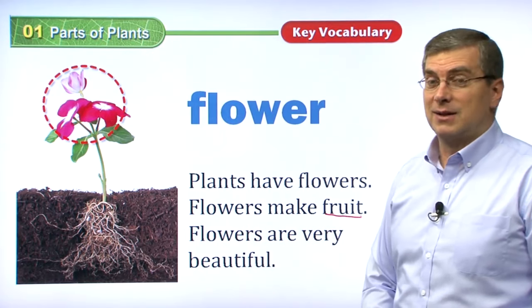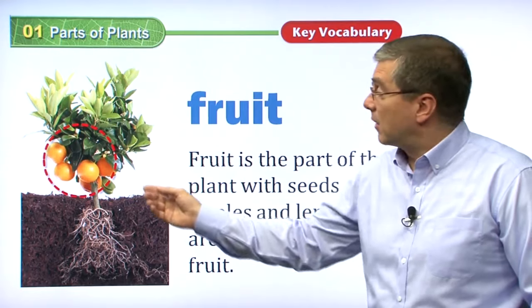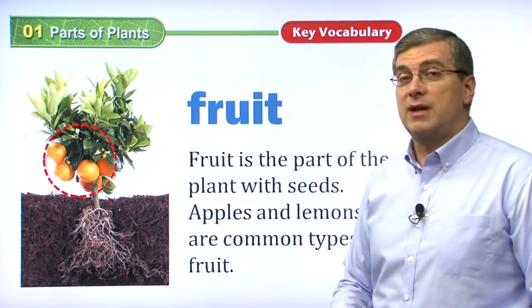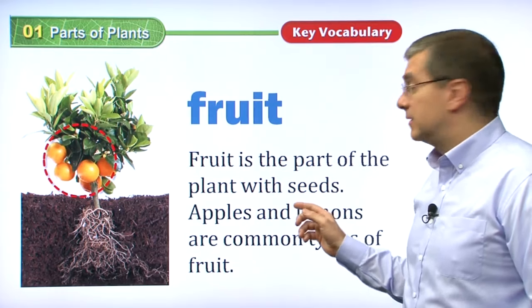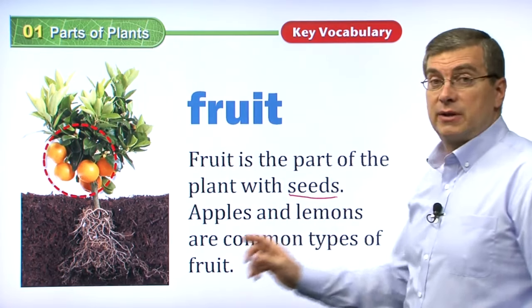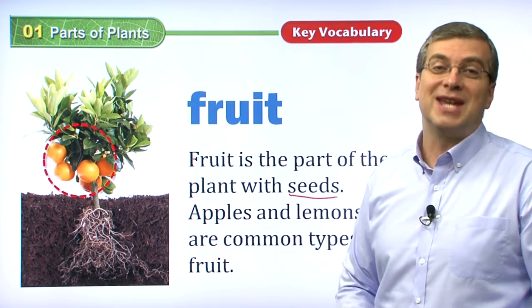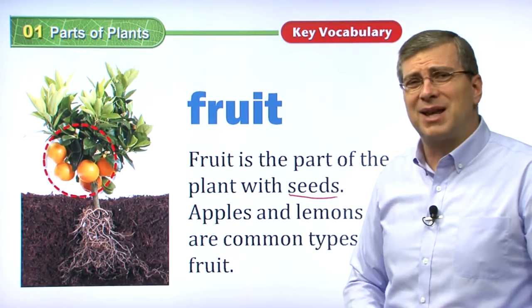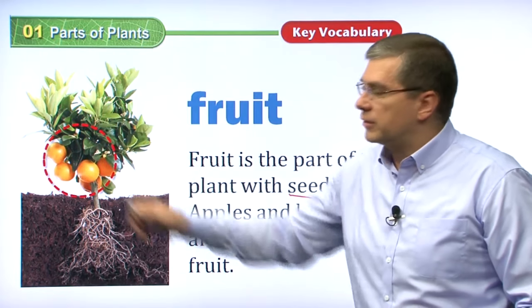Flowers produce fruit. Here we see an example of fruit — these look delicious, don't they? Fruit is good for us; it's the part of the plant that we eat. These look like oranges. There are many different kinds of fruit. Fruit is the part of the plant with seeds. Apples and lemons are common types of fruit. If you cut open an apple you will see seeds inside. If you open a lemon — be careful, it's sour — you also have to watch out for the seeds. So plants produce fruit.